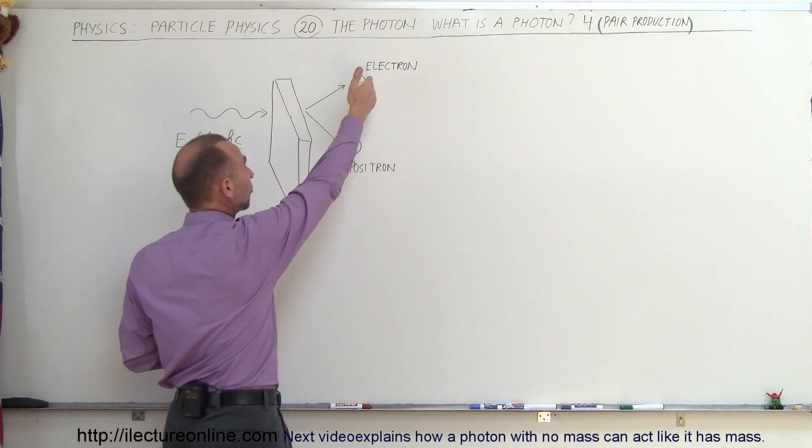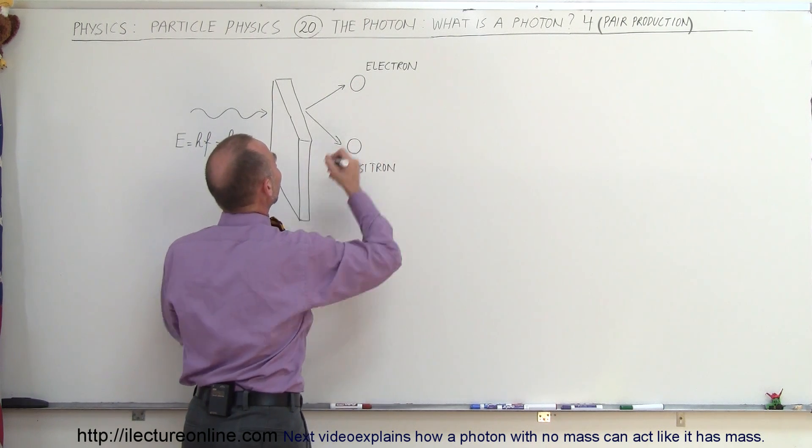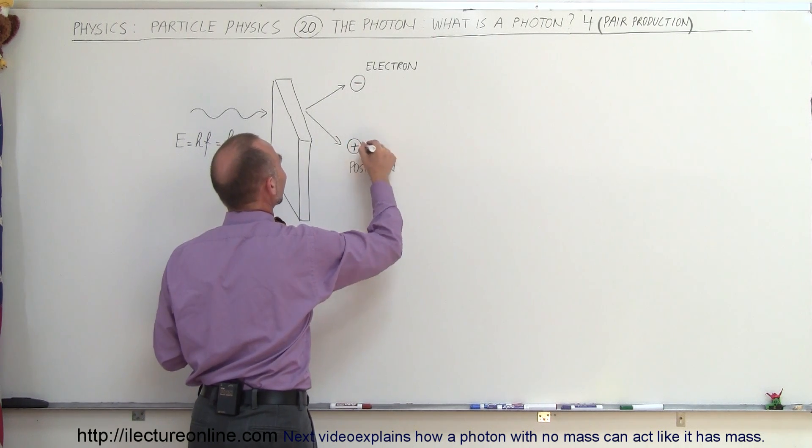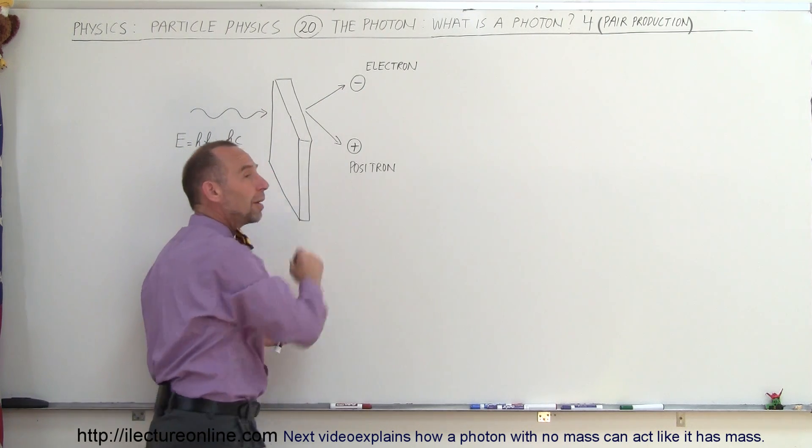In other words, an electron can be formed, and of course an electron is negatively charged, and a positron is positively charged, so it will form an electron and the anti-electron called a positron.